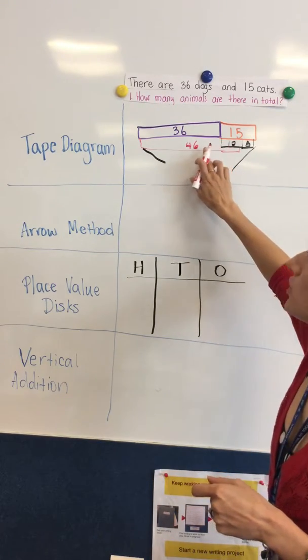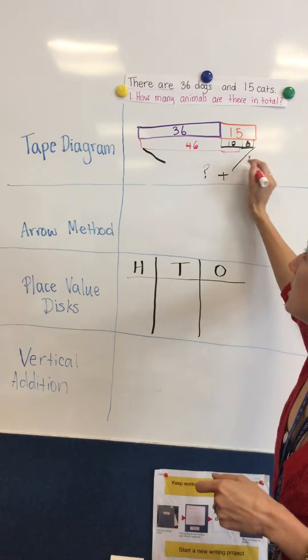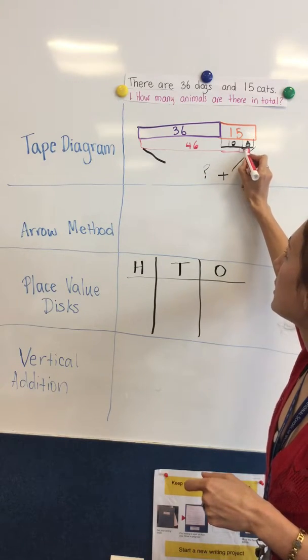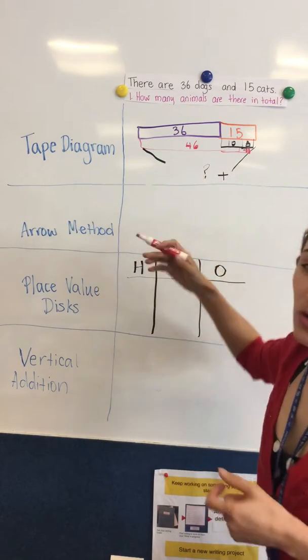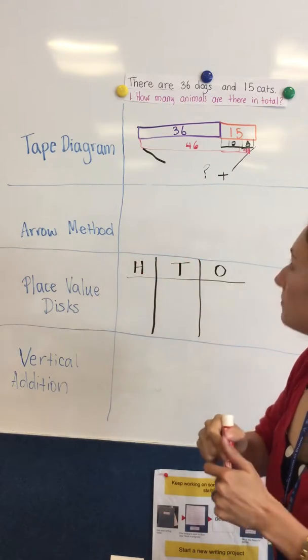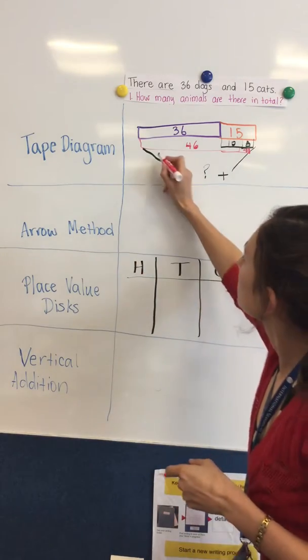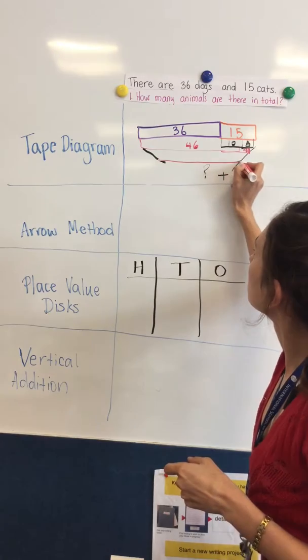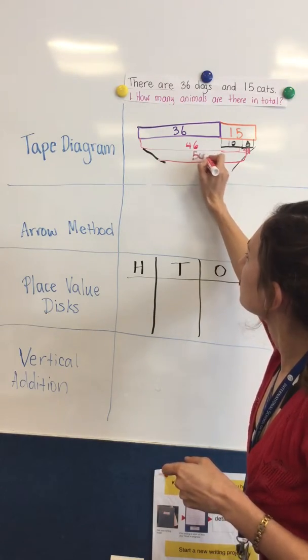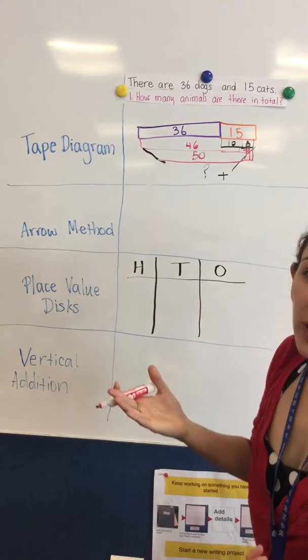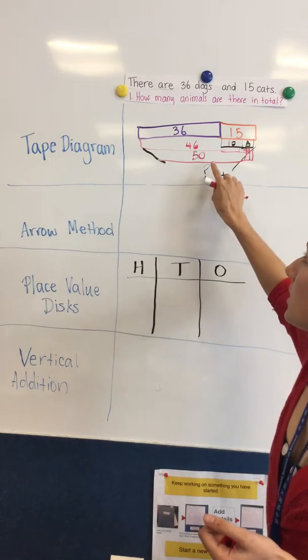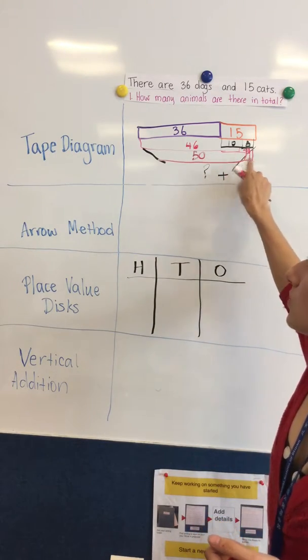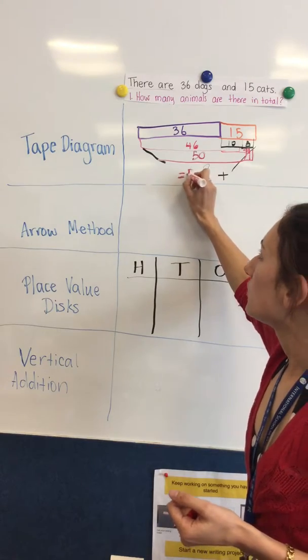So then I'm having to do 46 plus 5. I know to get to the next 10 I only need 4 more, so 46 plus 4 is 50, and then there was one left over, so the answer will be 50 plus 1 which equals 51.